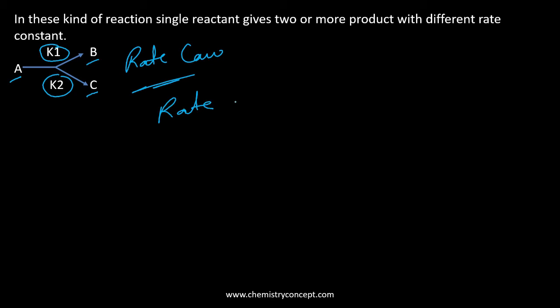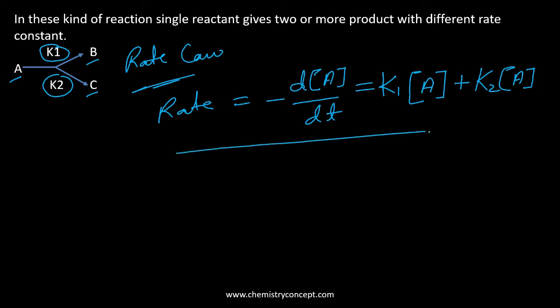The rate law here will be given as: Rate equals minus d[A]/dt equals k1[A] plus k2[A]. This is the rate.